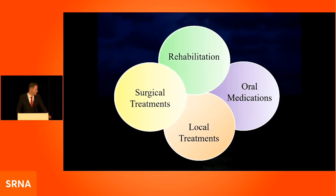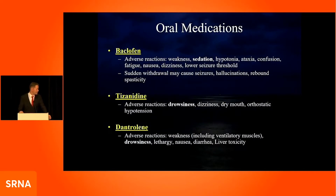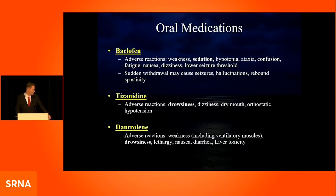As spasticity becomes more involved, we use all kinds of approaches — from rehabilitation to oral medications to local treatments, and in the most severe cases, surgical treatments. The three most commonly used oral medications are baclofen, taken usually three times a day; tizanidine (Zanaflex), taken a couple of times a day; and in more rare cases, dantrolene.